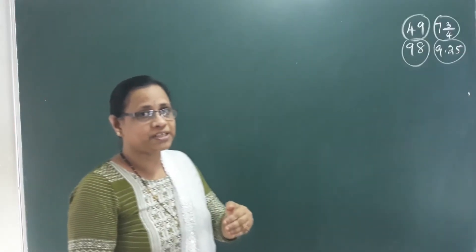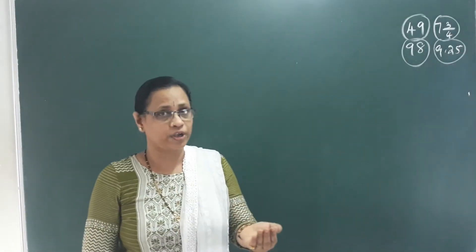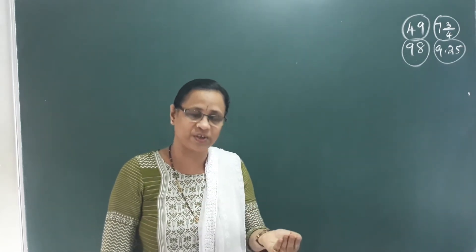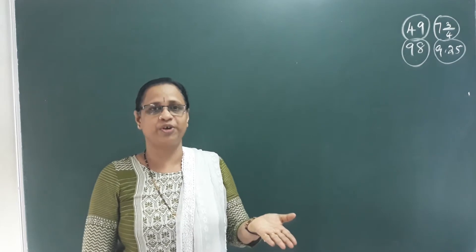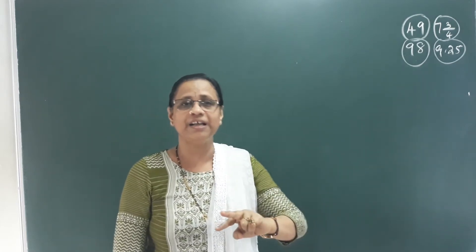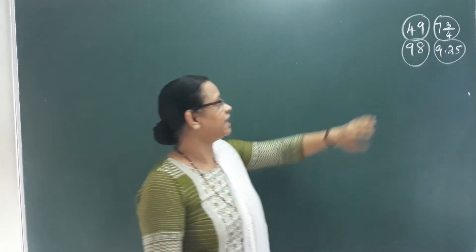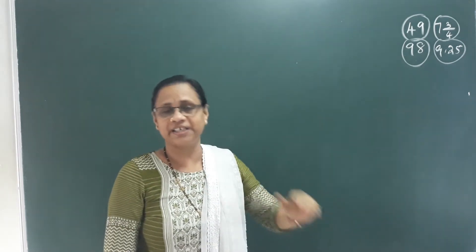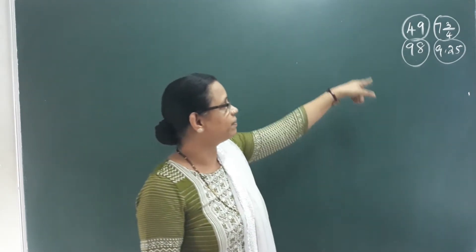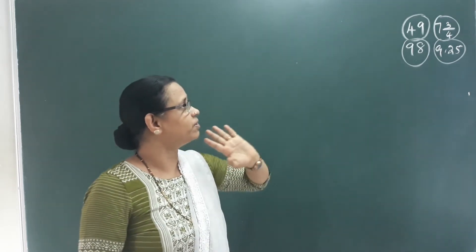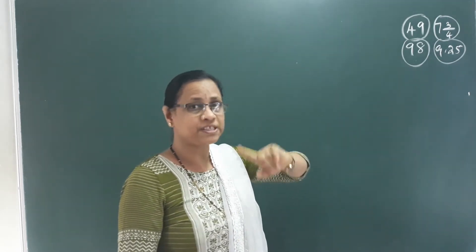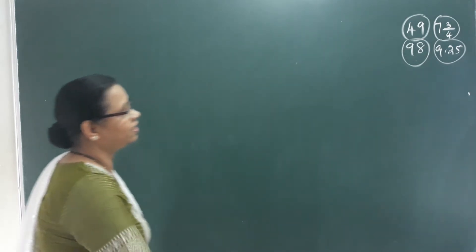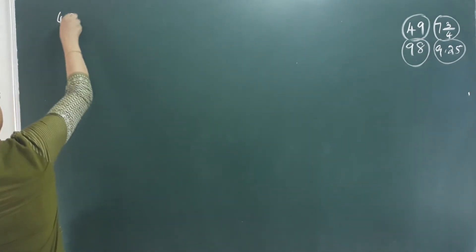Now we are learning a plus b whole square and a minus b whole square, that is x plus y whole square and x minus y whole square. These are the two formulas, these two identities. We will explain this practice problem on page 79. First practice problem: we are learning the difference of squares.